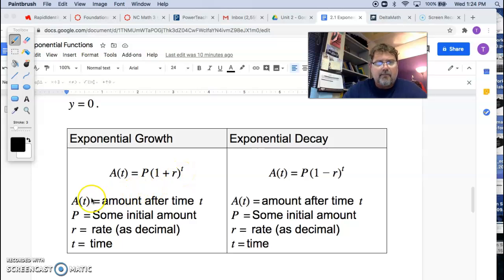All right, a(t) is the output, and in this case, it's defined as some amount, amount of something after some time. p, the multiplier, is some initial amount, what you start with, and we talked about this before. The rate, I wrote as a decimal. It is just a rate, but you can't use, if they said 15%, you can't use 15 in this formula. You'd have to use 0.15. Okay, and t is time.